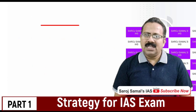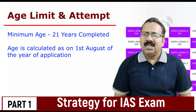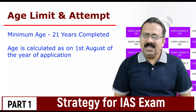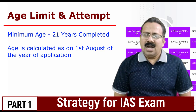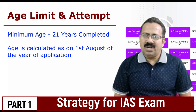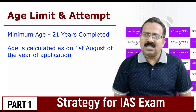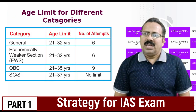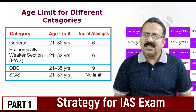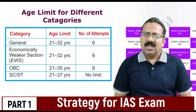Now coming to the second aspect — age limit and number of attempts. The minimum age for applying for civil service is 21 years, and the date counted for it is 1st August of the specific year. For example, a candidate applying for civil service 2021 must have completed 21 years of age by 1st August 2021. Now let's come to the age limit for different categories of students as well as the number of attempts allowed for different categories of candidates.